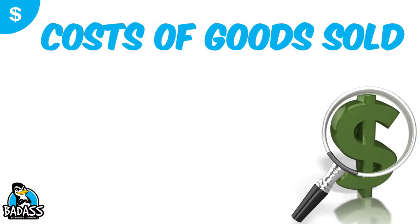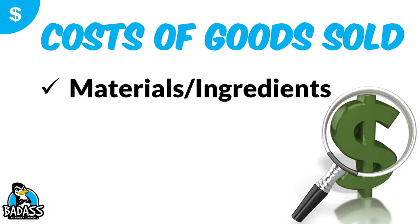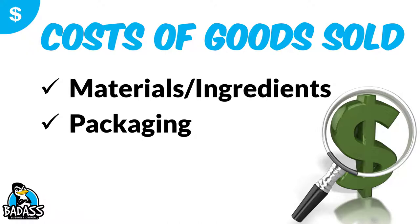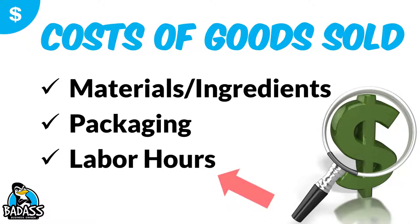Your cost of goods sold are primarily going to be made up of three things. Most people will have the materials they use — or ingredients if they bake or make something — and then packaging, because a lot of product-based businesses have some type of packaging tied to the product. And finally, you're going to have labor hours. This is the part most people fail to include when figuring out their cost of goods.